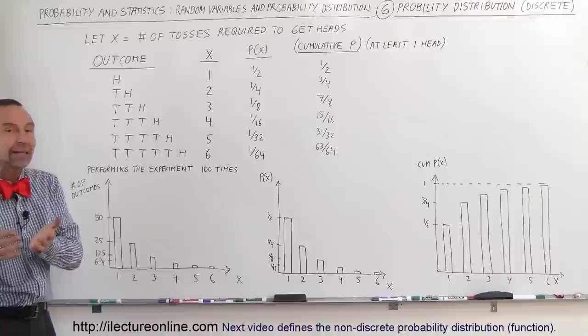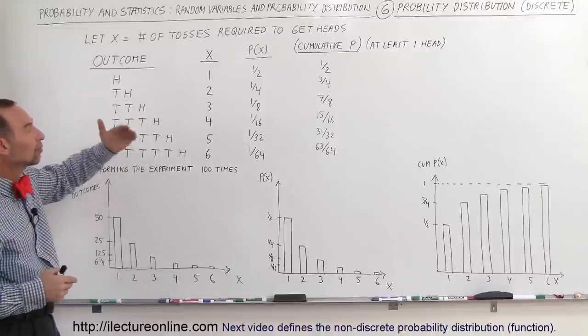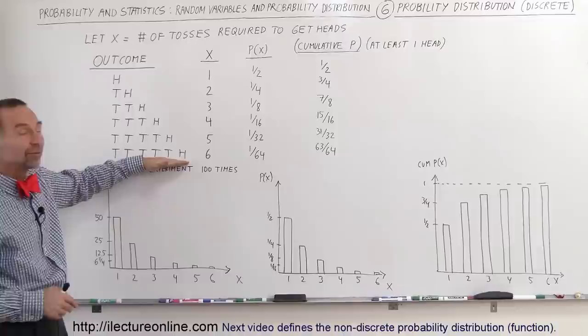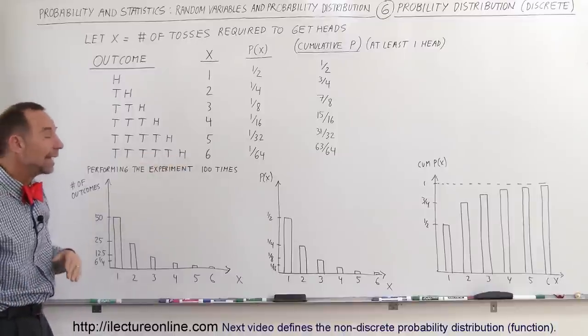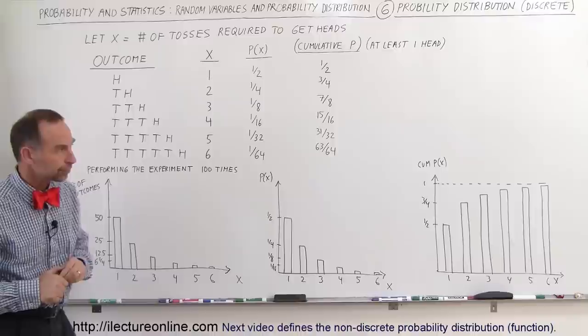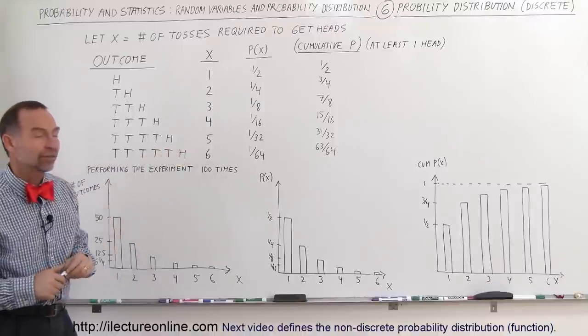You can see that the probability of that happening will be smaller and smaller. What's the probability that you toss the coin six times and you'll get a head on the sixth time? That would be 1 out of 64. In that case, x will be 6.